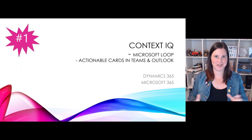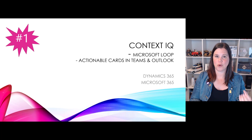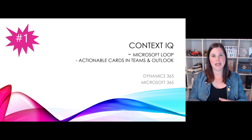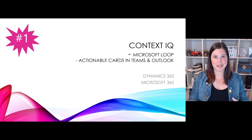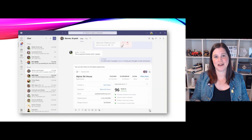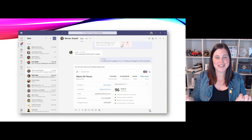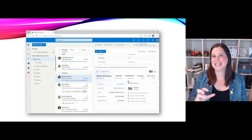My number one feature is around two new technologies: ContextIQ and Microsoft Loop. Microsoft Loop is basically like Adaptive Cards but going much further — the idea is that we can build components that can be used anywhere, surfacing your business application data in Teams and Outlook. You can have a live data component in Teams from Dynamics, edit it, have multiple people working on it simultaneously, all controlled by security and permissions.